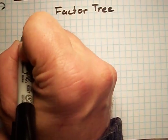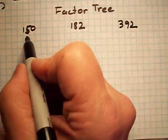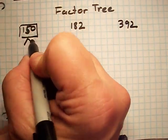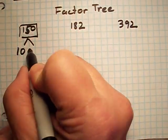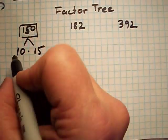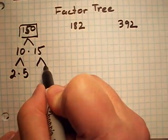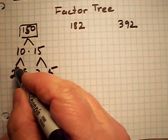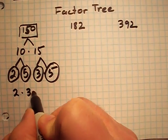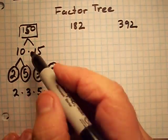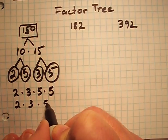Let's look at 150, 182, and 392. For 150, I can see that 10 times 15 equals 150. These are not prime yet, so 2 times 5 equals 10, and 3 times 5 equals 15. Now I have all prime numbers: 2, 5, 3, and 5. So I can write 2 times 3 times 5 times 5 — these are my prime factors of 150. I can also write it as 2 times 3 times 5 squared.